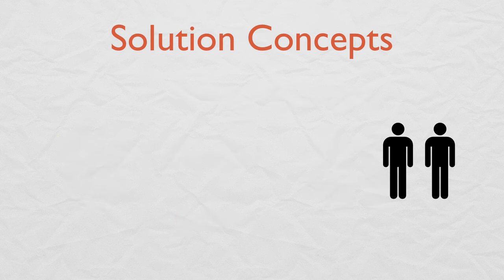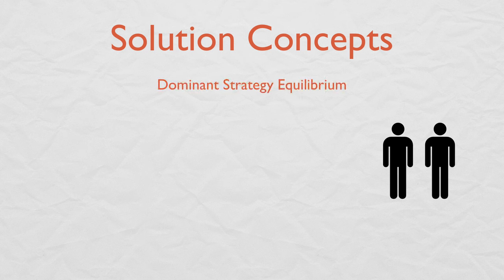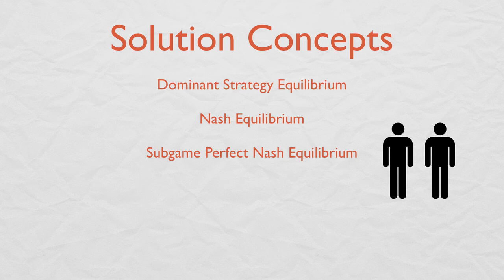Now it's not always obvious how people will behave, even with players' payoffs and rules clearly defined. That's why game theorists have a number of solution concepts for games, including the Dominant Strategy Equilibrium, the Nash Equilibrium, the Subgame Perfect Nash Equilibrium, the Bayesian Equilibrium, and the Weak Perfect Bayesian Equilibrium.